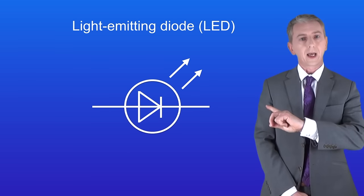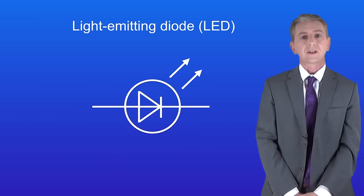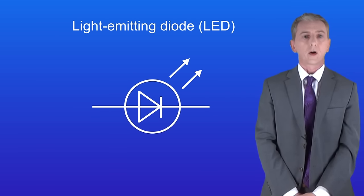Here's a symbol for an LED. You'll notice that it's the same as the symbol for a diode, but it has arrows coming off.